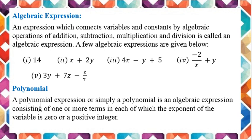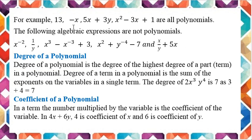Now we are moving to the polynomial. A polynomial expression, or simply a polynomial, is an algebraic expression consisting of two or more terms in each of which the exponent of a variable is 0 or a positive integer. Keep in mind that if the exponent has a negative value, then it will not be a polynomial. For example: